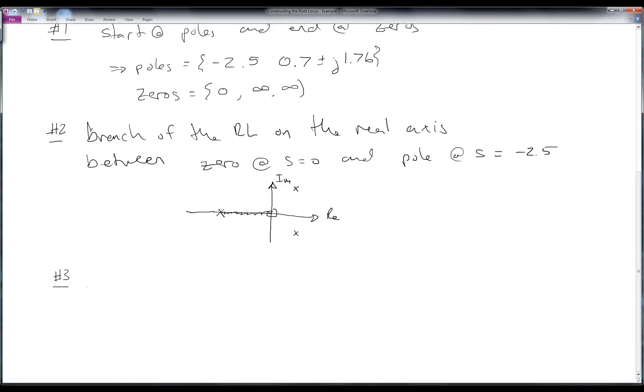Rule number 3 tells us that there are asymptotes, and the center of asymptotes is given by alpha, which is the sum of the poles minus the sum of the zeros divided by the number of finite poles minus the number of finite zeros. The number of finite poles is 3 and the number of finite zeros is 1, so I get 2 there. I add up all the pole locations, that's minus 2.5, then add up all the real parts of the zeros and subtract, so I get minus 0.7 plus 0.7, divide by 2, and end up with minus 0.5.